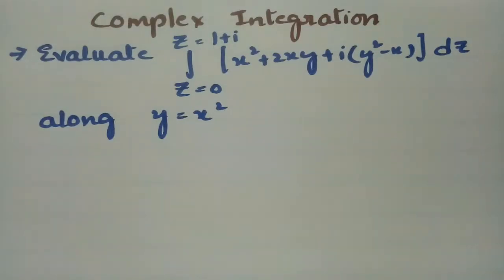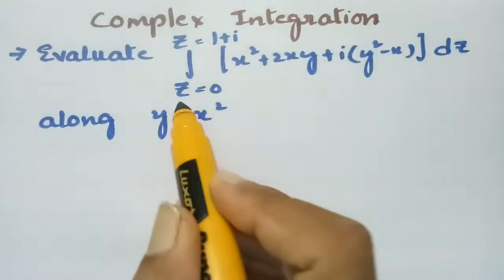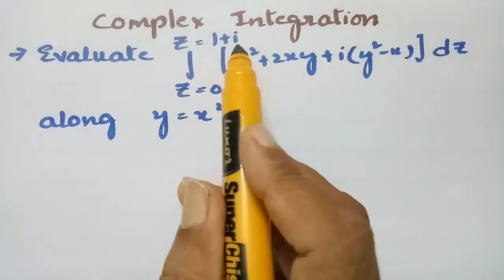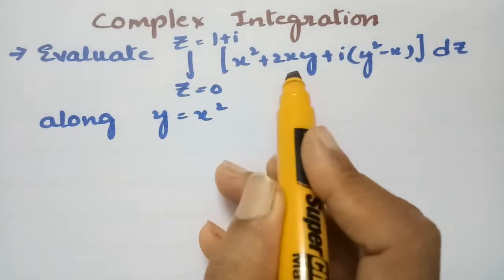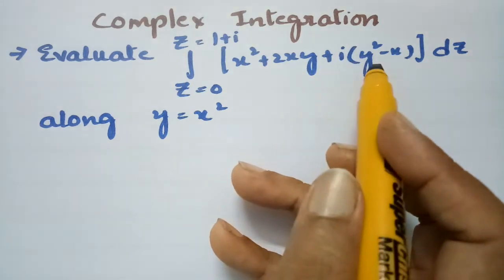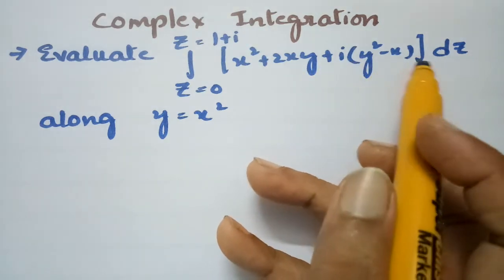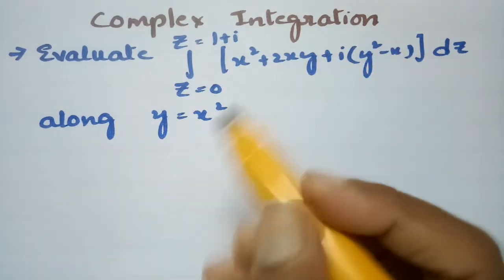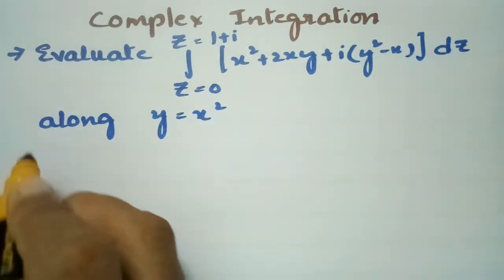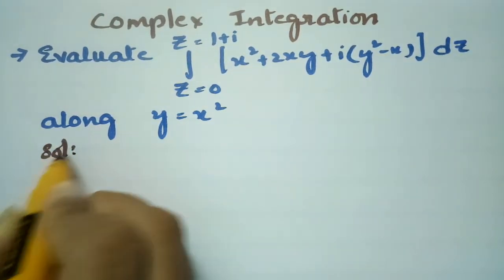Today's video I am going to give a solution for the most important problem from complex integration. I am going to evaluate the integral from z = 0 to z = 1 + i of (x² + 2xy) + i(y² − x) dz along y = x². Here is the solution.